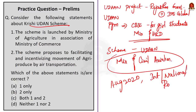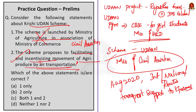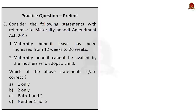Coming back to the question: for two-statement questions, always go through both statements before confirming your final answer. The first statement is incorrect because the Krishi Udaan Scheme is launched by the Ministry of Civil Aviation, not the Ministry of Agriculture. The second statement is correct because the scheme proposes to facilitate and incentivize the movement of agri produce by air transportation. Therefore, the answer for this question is Option B — statement 2 only.